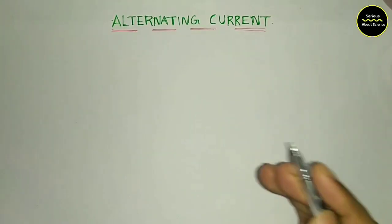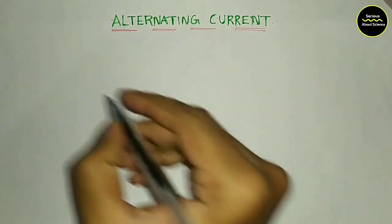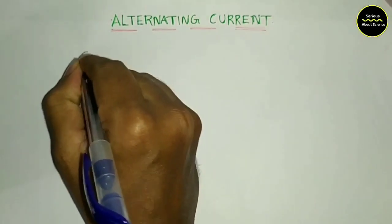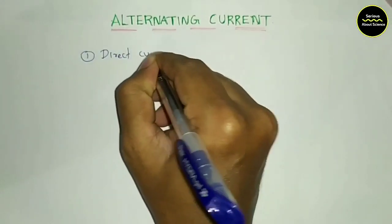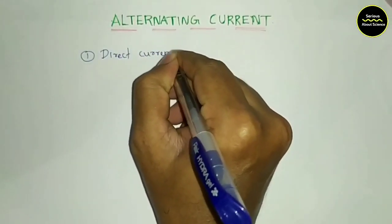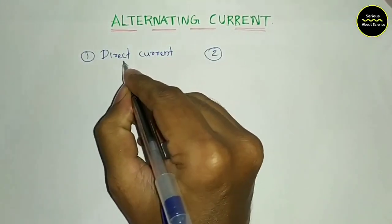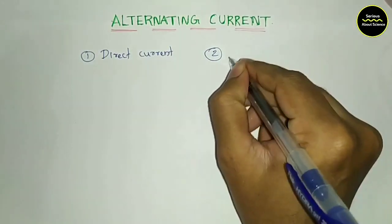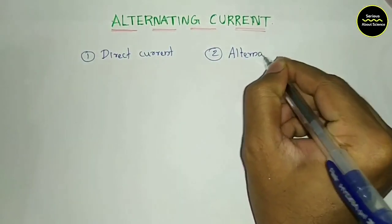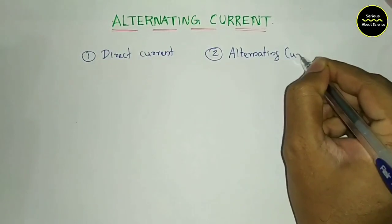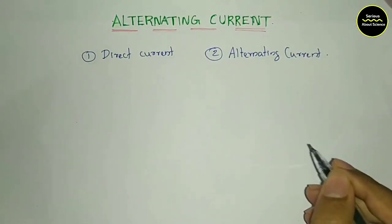The rate of flow of charges is called Electric Current. I classify the magnitude and direction name in two areas. One is Direct Current. Two is Alternating Current. DC and AC.